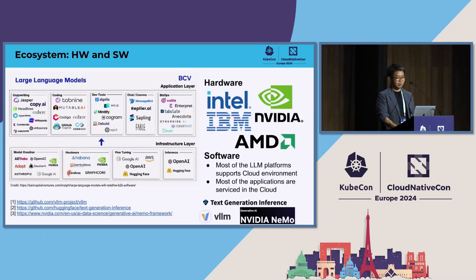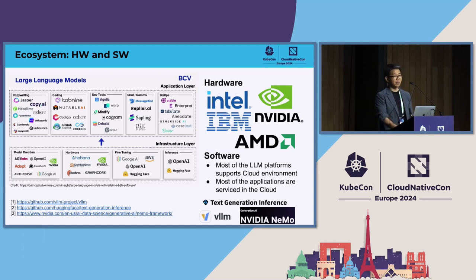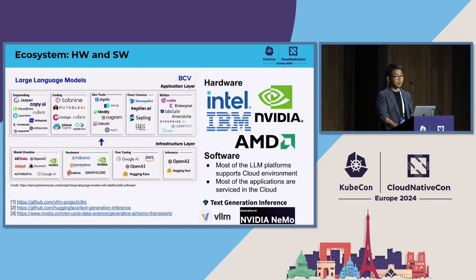A lot of hardware vendors are working on this — NVIDIA, Intel, IBM, AMD — each with their own hardware. A lot of software stacks have been developed on top of that. NVIDIA is almost dominating inference and training, but many vendors are working on it. Most of these are deployed in cloud, very close to cloud native, and many related projects appear in this conference.